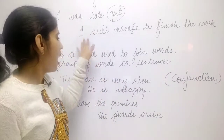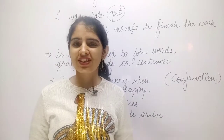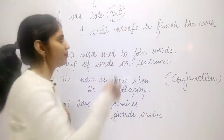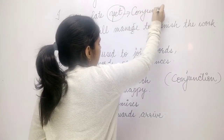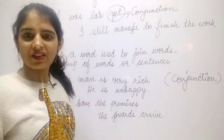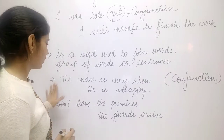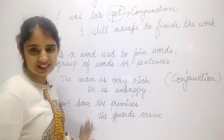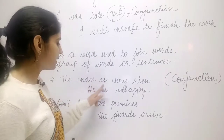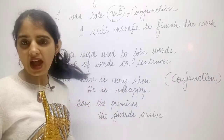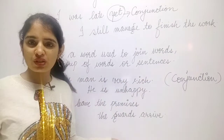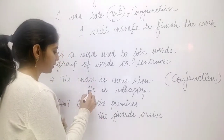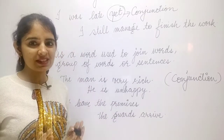Here I have joined these two sentences with the word 'yet,' so I have used a conjunction that joins two sentences. Now again I have written sentences — you have to check the difference. 'The man is very rich' — this sentence is complete. 'He is unhappy' — this sentence is also complete.